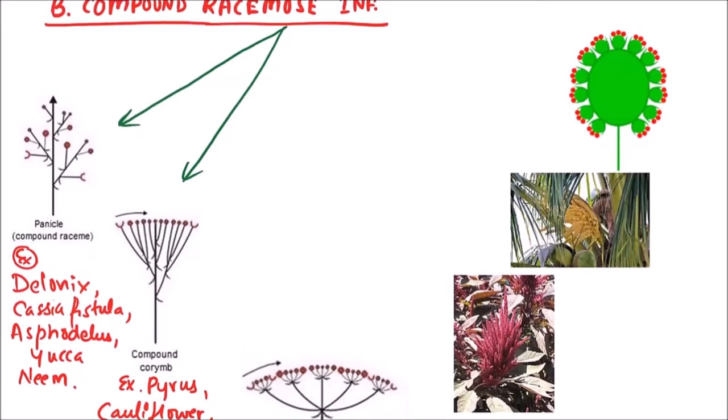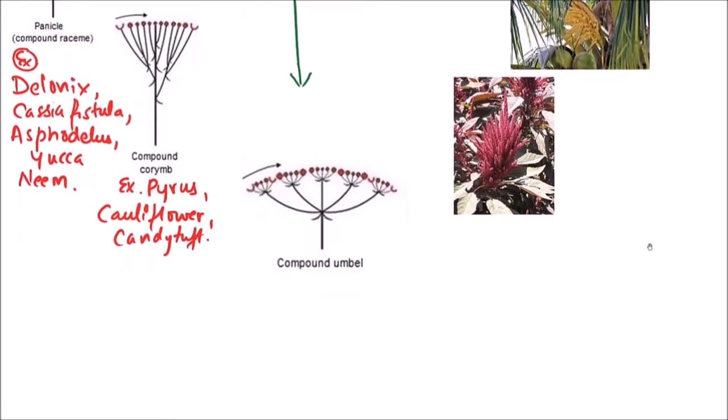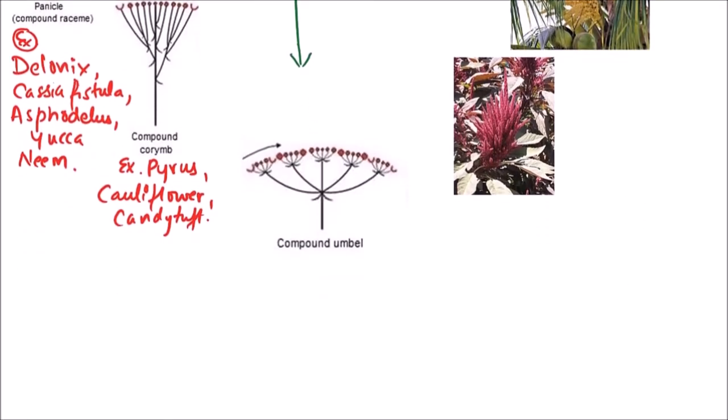The third one is compound umbel, also known as umbel of umbels. Here, several daughter umbels, like this is one umbel, another umbel, these are all daughter umbels, and these are also arranged in umbel type of arrangement.